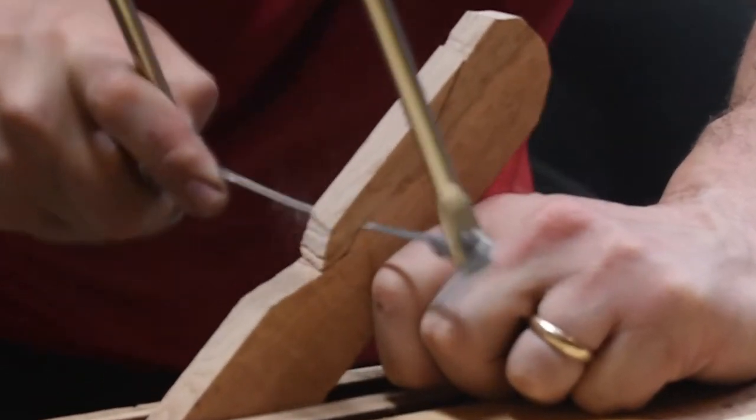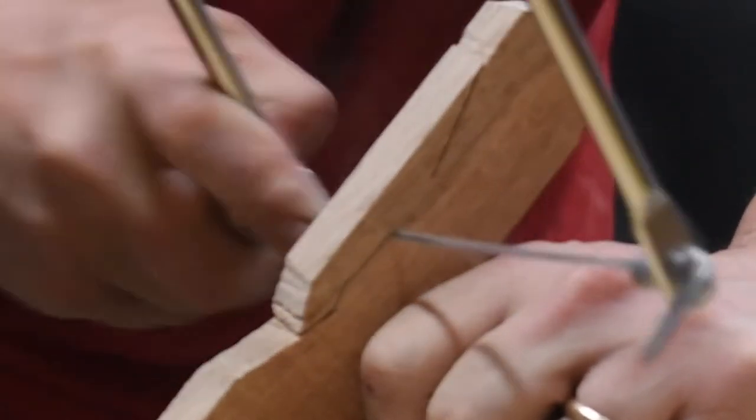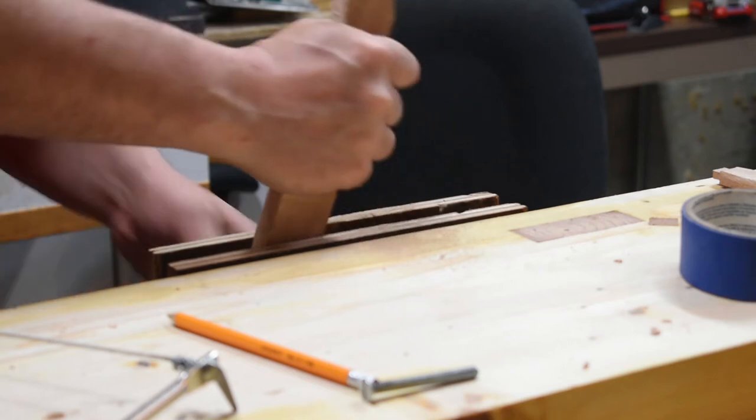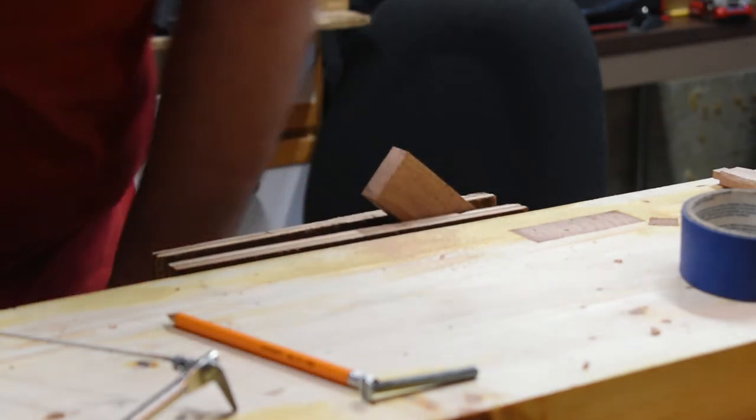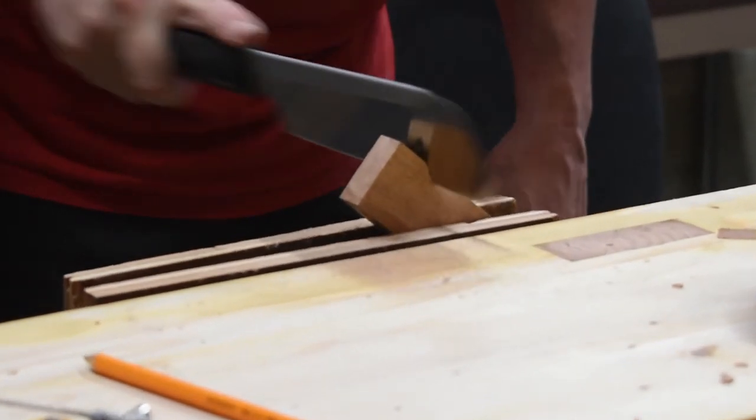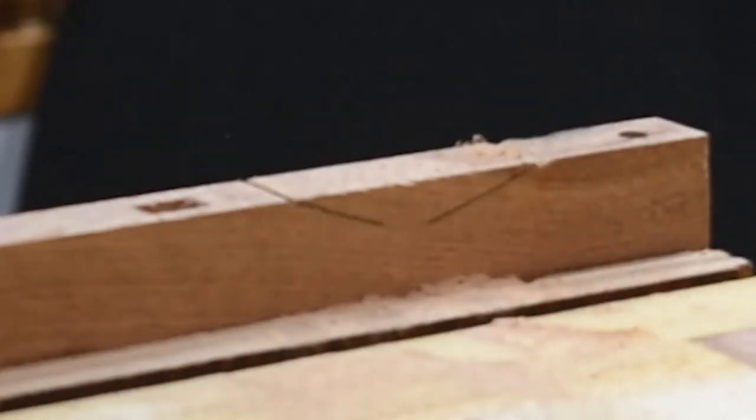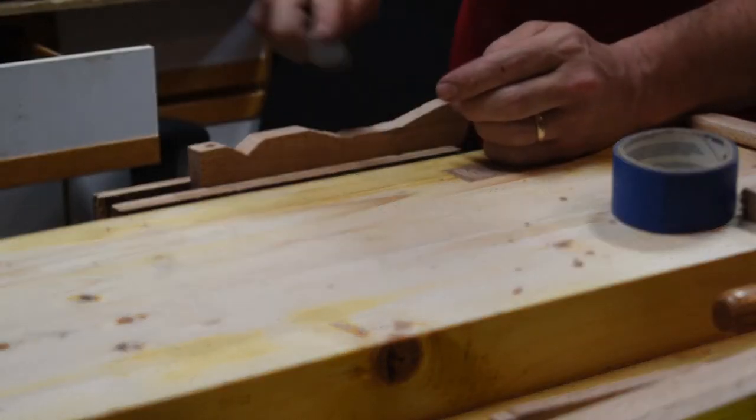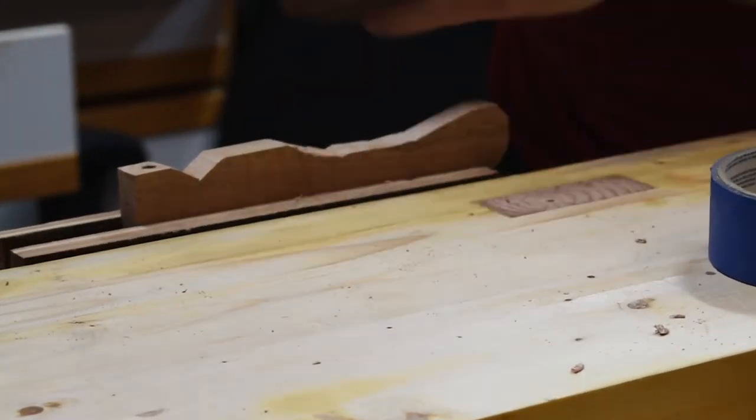Then coming in with the cheap $5 coping saw that I already have, I am going to finish the cuts and make them more rounded. Here I am coming in with the rasp to round things over before I come back through with the sandpaper to smooth things out.